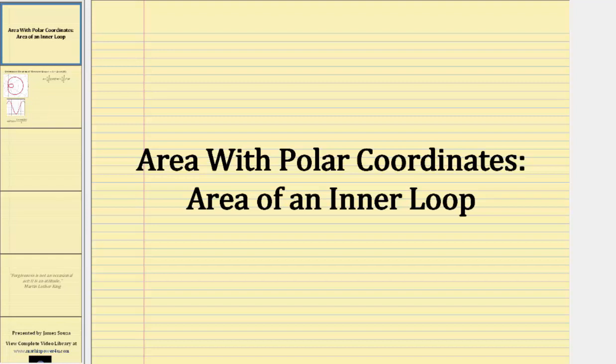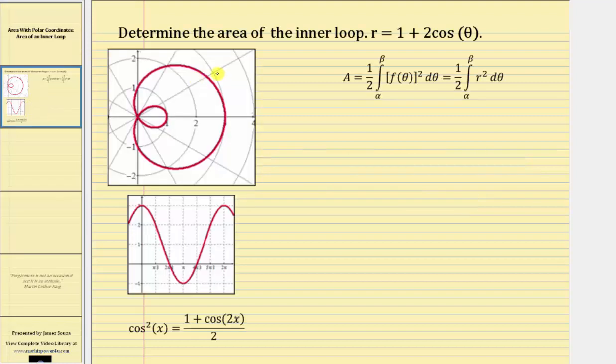In this lesson, we will determine area using polar coordinates. We are asked to determine the area of the inner loop of r equals one plus two cosine theta, which is graphed here.